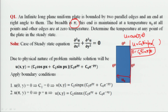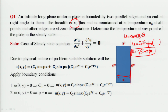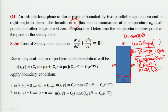Since c₂ ≠ 0, we need sin(pπ) = 0. The general solution of the trigonometric equation sin(nπ) = 0 gives p = n, where n = 0, 1, 2, 3, and so on — the natural numbers. So we obtain the value of p.